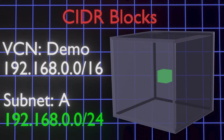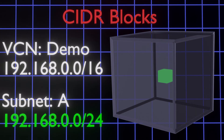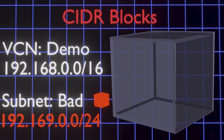Consider a VCN with a CIDR block of 192.168.0.0/16. A subnet of 192.168.0.0/24 will reserve the IP addresses from 192.168.0.0 to 192.168.0.255 — it fits perfectly inside of the CIDR block for its parent VCN. However, a subnet with a CIDR block of 192.169.0.0/24 would not fit into the same VCN because its first two bytes do not match the VCN's address space.